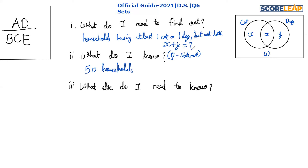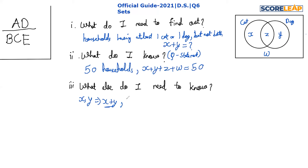I simply want to find the value of x plus y — that is, households having at least one cat or one dog but not both. I also know that x plus y plus z plus w equals 50. So if I can find z and w, I can calculate x plus y.